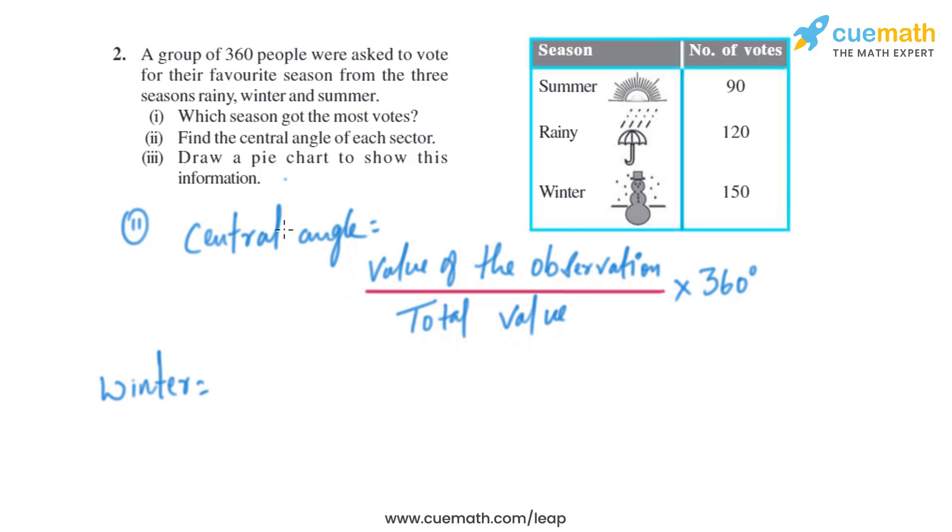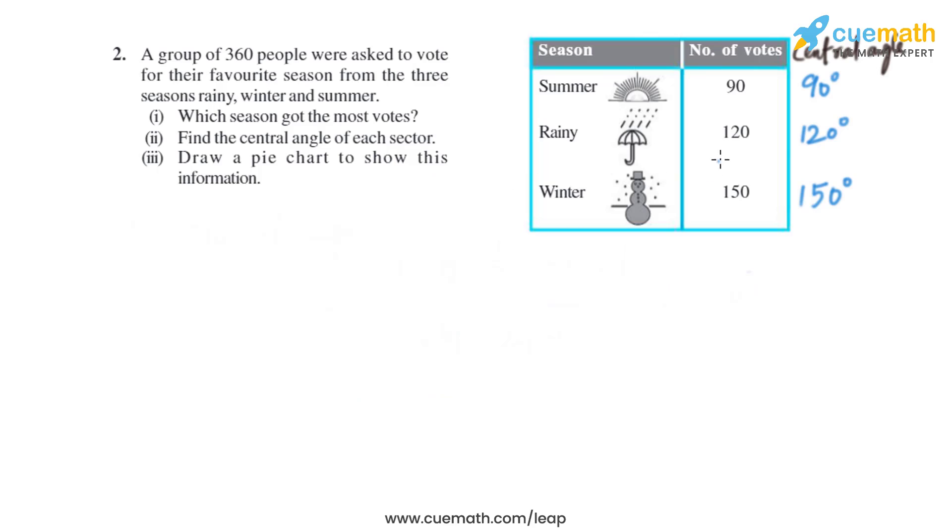Now for winter season, it will be 150 divided by 360 multiplied by 360 degrees, which is same as 150 degrees. Now we have got the central angle for each of the season.